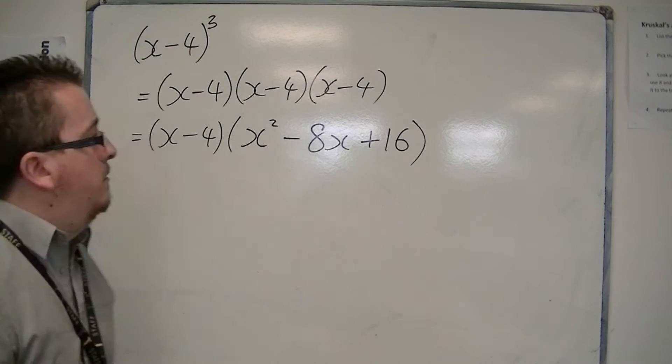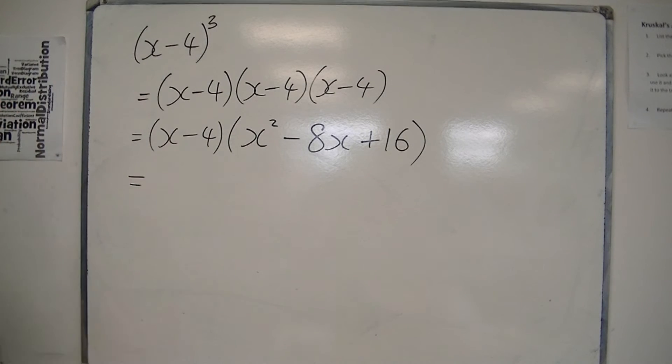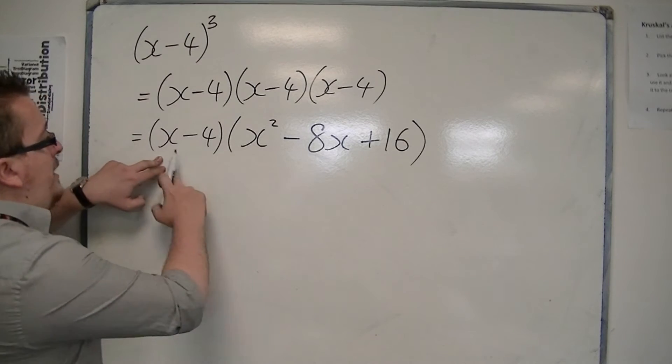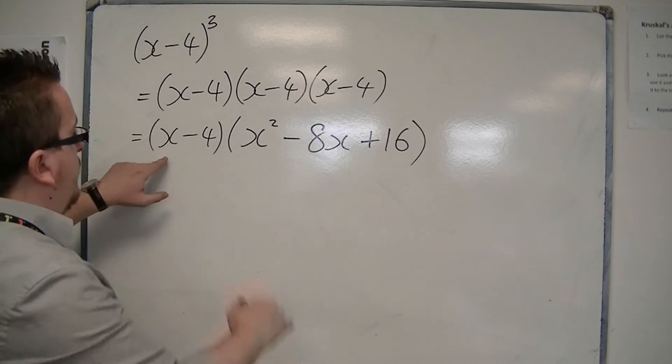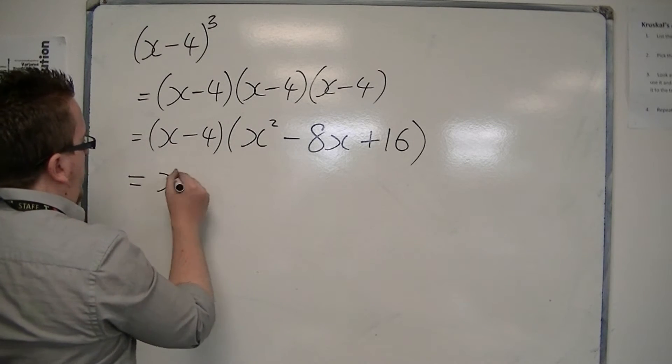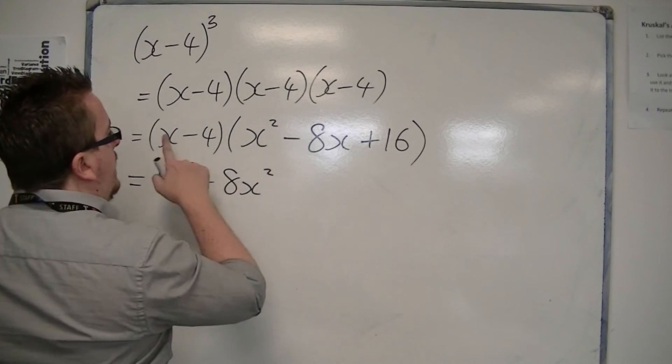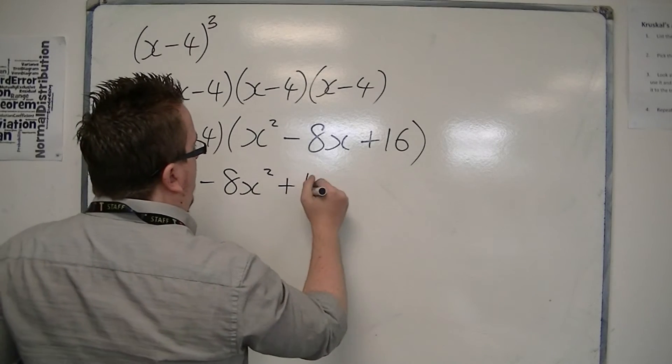Now at this stage, you need to multiply every term in this bracket by each of the terms in this bracket. So we've got x times x squared is x cubed, x times minus 8x is minus 8x squared, x times 16 is 16x.